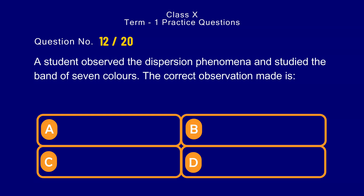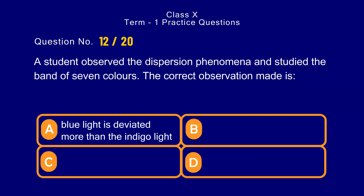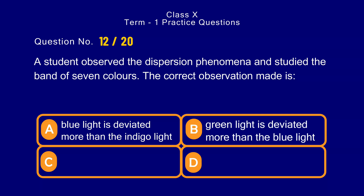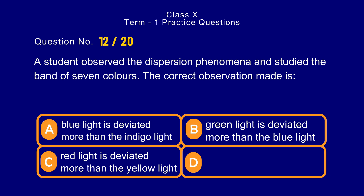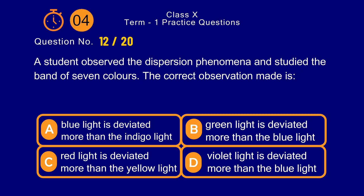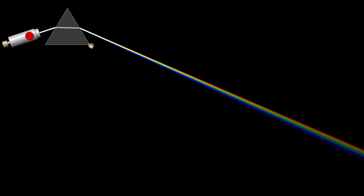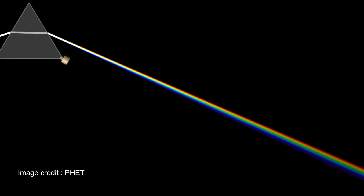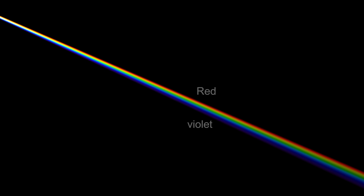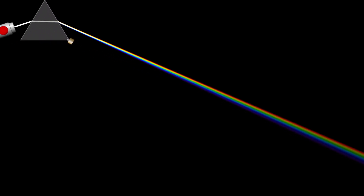Question number 12. A student observed the dispersion phenomenon and studied the band of 7 colors. The correct observation is — options: a) blue light is deviated more than indigo light, b) green light is deviated more than blue light, c) red light is deviated more than yellow light, d) violet light is deviated more than blue light. The correct answer is option d) violet light is deviated more than blue light. The bending of light increases in this order: red, orange, yellow, green, blue, indigo, violet. Violet bends the maximum and red bends the least, so violet bends more than blue.